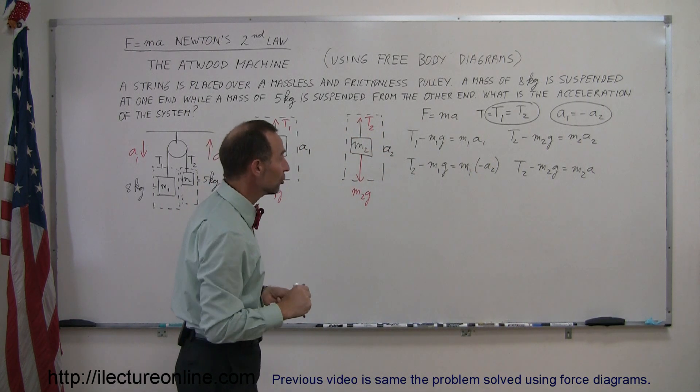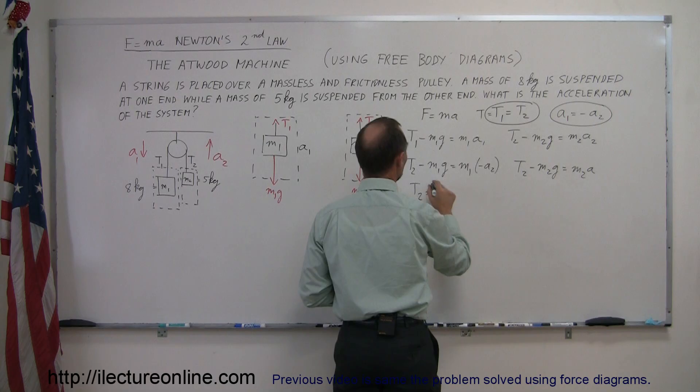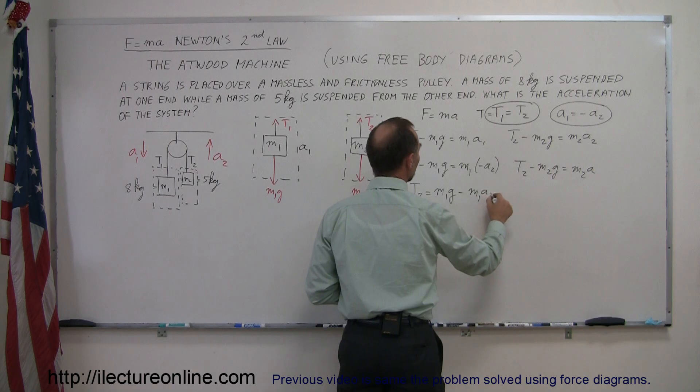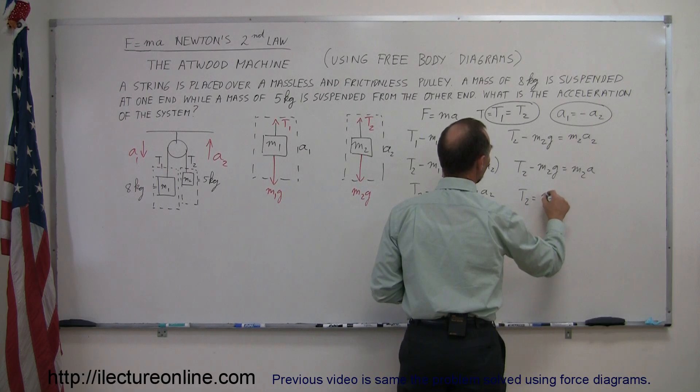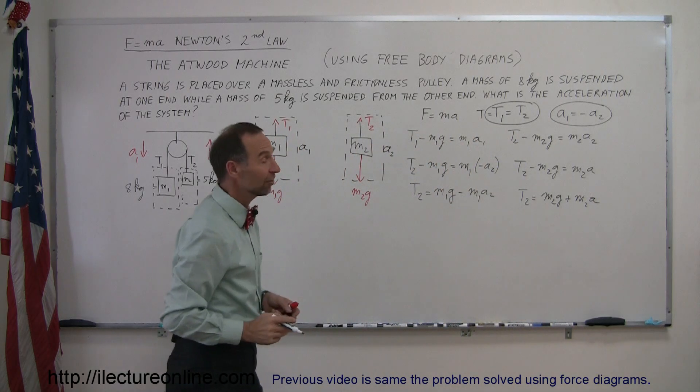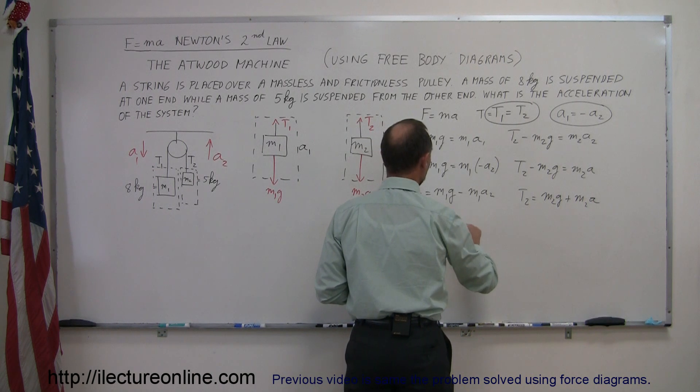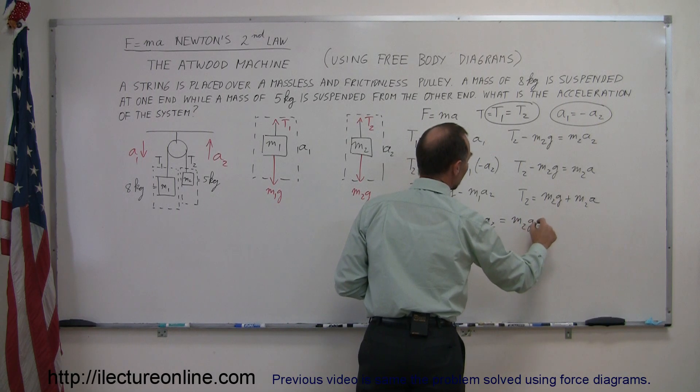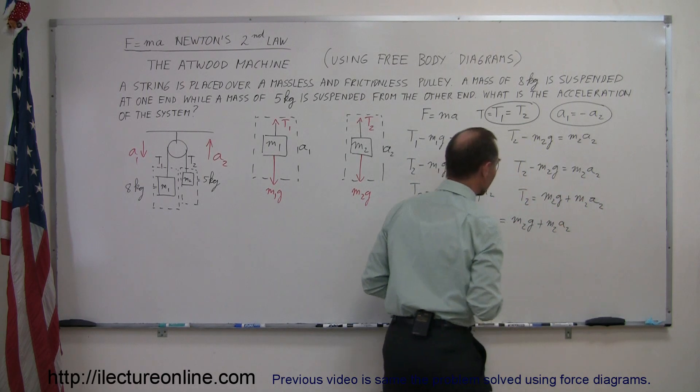Let's solve each equation for T2. We have T2 equals M1G minus M1A2. And on the right side, T2 equals M2G plus M2A2. We can set those two equations equal to each other. M1G minus M1A2 must therefore equal M2G plus M2A2. Now we have one equation with just one unknown, which is A2.